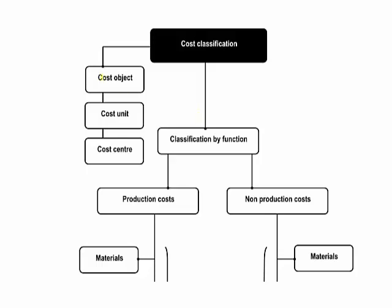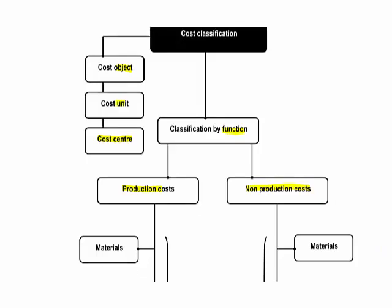We'll be thinking about the different items we need to group costs together for, whether that's cost objects, units, or a part of the business such as a cost centre. We'll look at how we can group our costs according to the function of the departments. The first important split will be whether there are production costs — the costs that exist because we have a factory — and non-production costs, the costs that exist because we have a business.